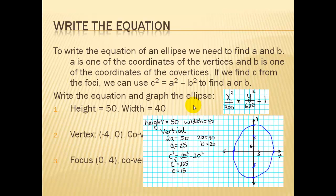I sketched a graph here of what it would look like. And to write the equation, since it's vertical, we put the a squared under the y. So 25 squared is 625, it goes under the y squared. The b squared goes under the x squared. And it's always equal to 1.